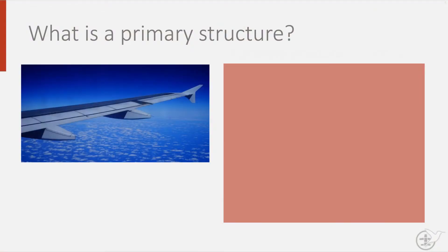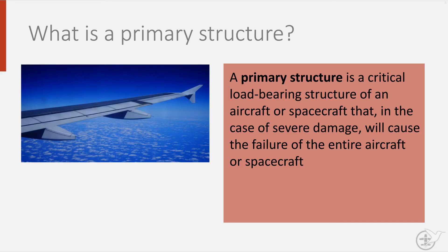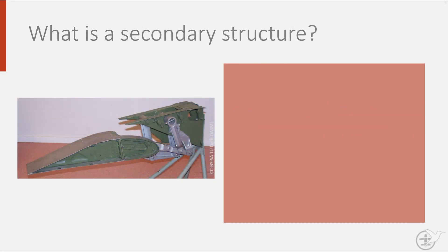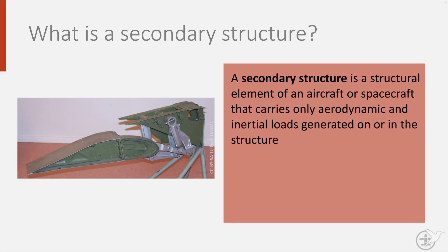When we look at the airframe, we can divide it into a primary and a secondary structure. The primary structure of an aircraft is formed by those parts that in case of severe damage will cause the entire aircraft to fail. Think here of the fuselage, the wing, or the empennage — that is the tail of the aircraft, consisting of a horizontal and vertical tailplane. Secondary structures are elements that carry only aerodynamic or inertia loads generated on or in the secondary structure. Here you can think of the control surfaces of an aircraft.